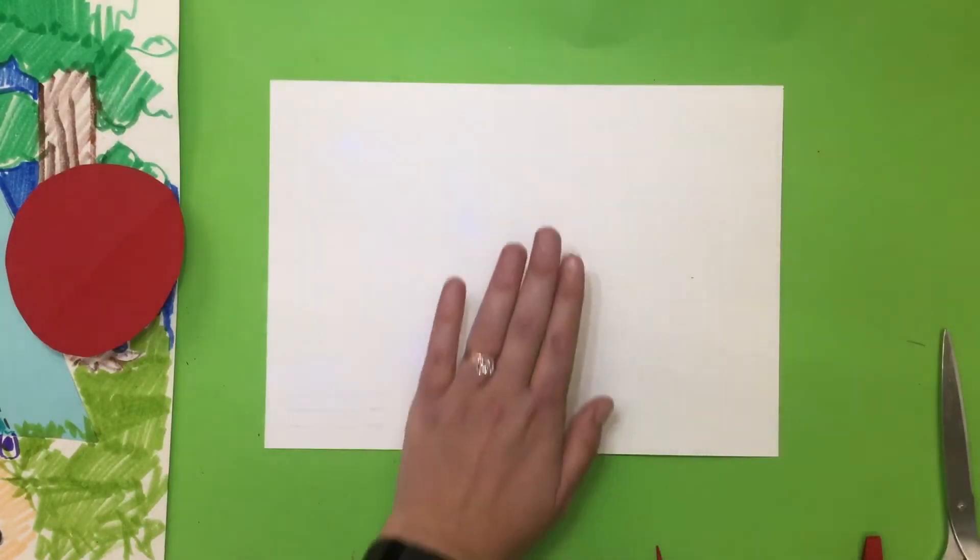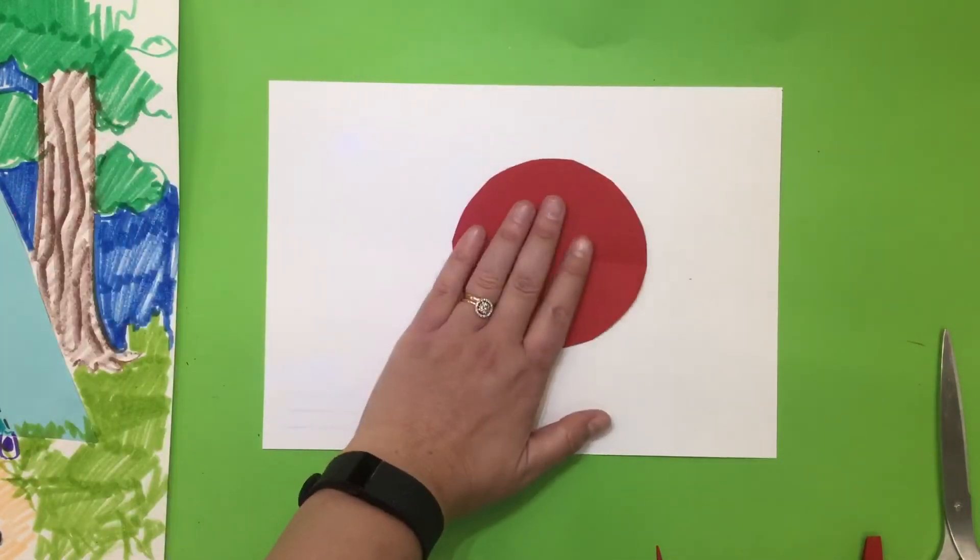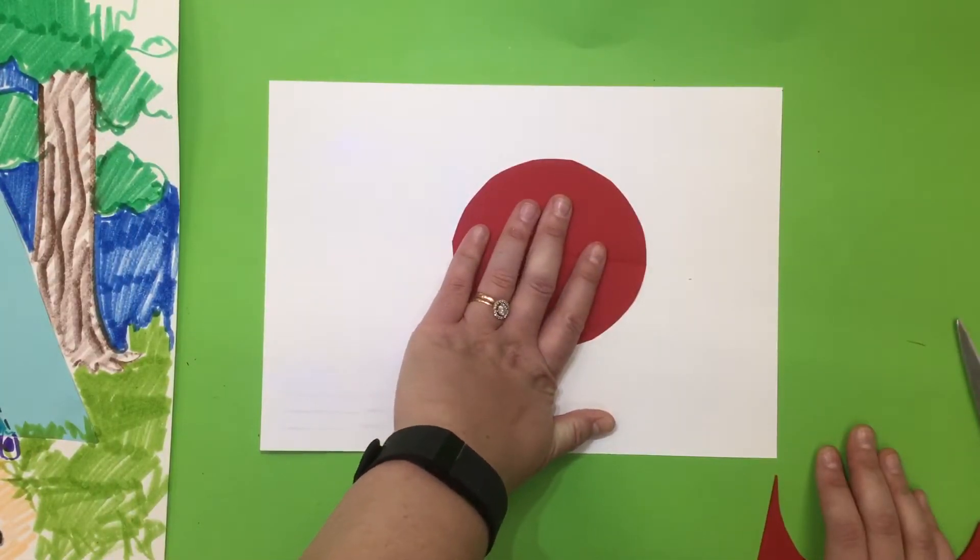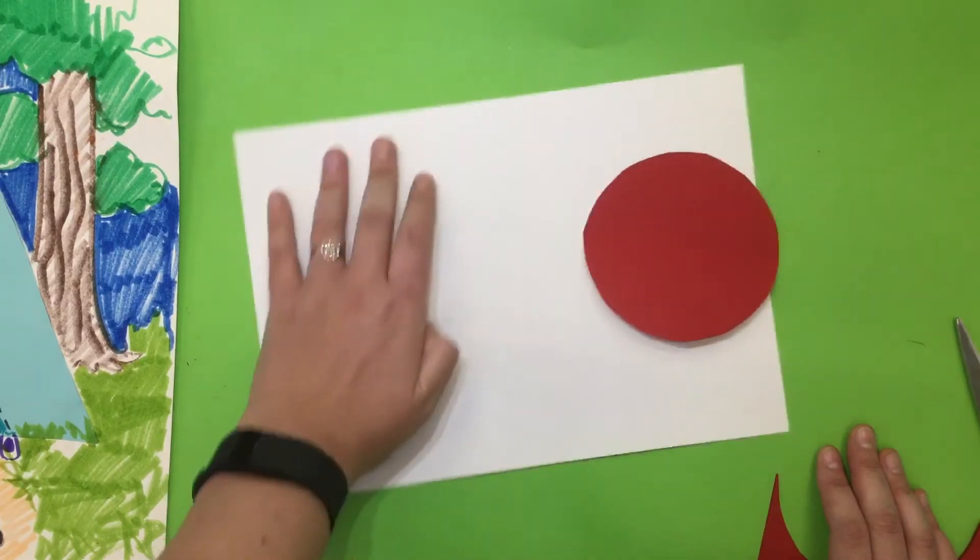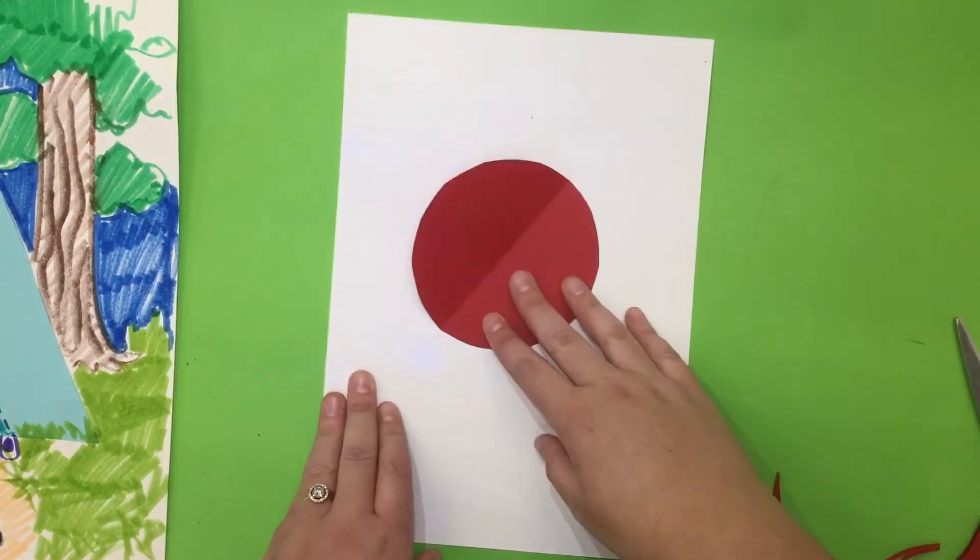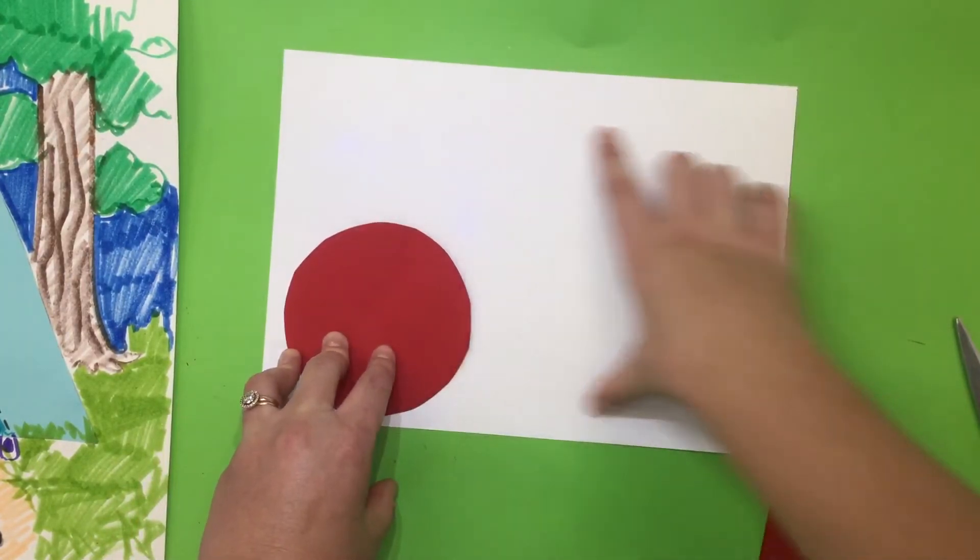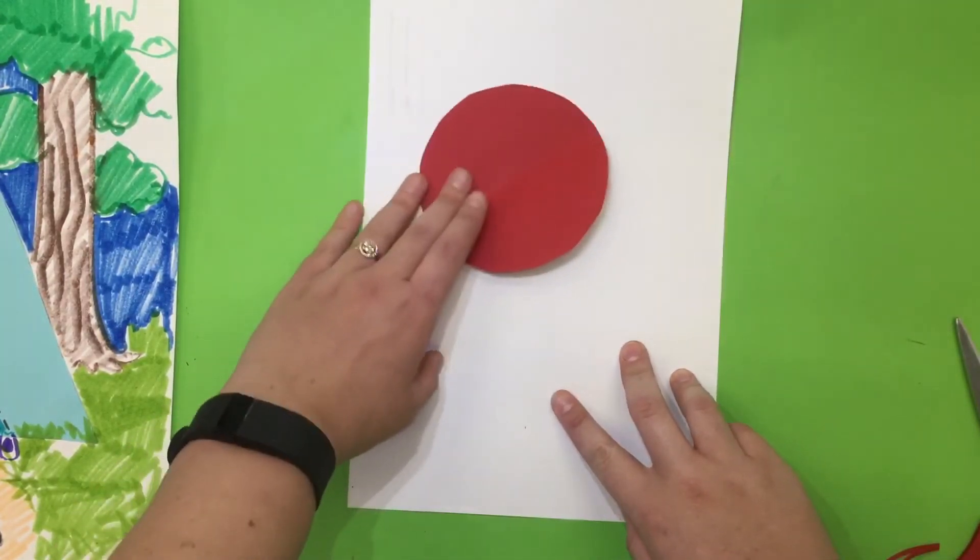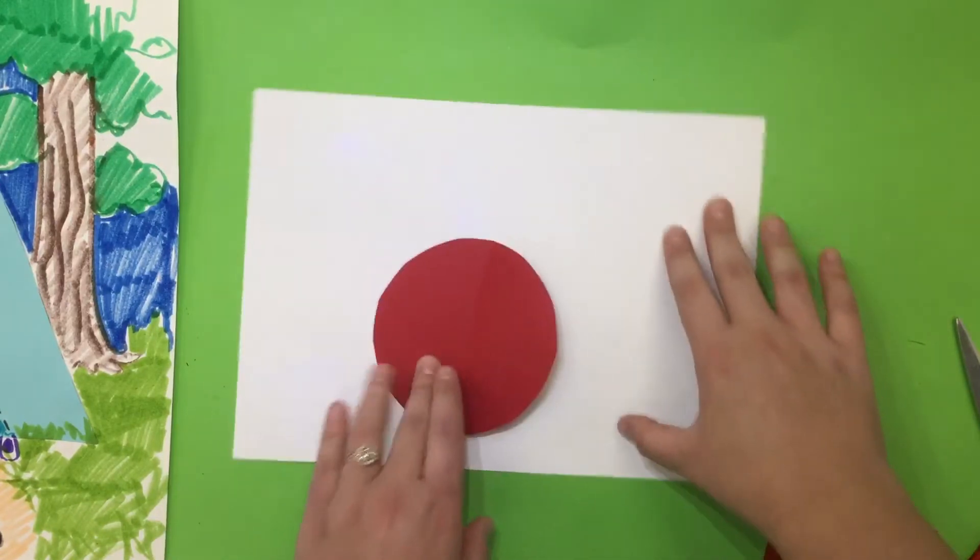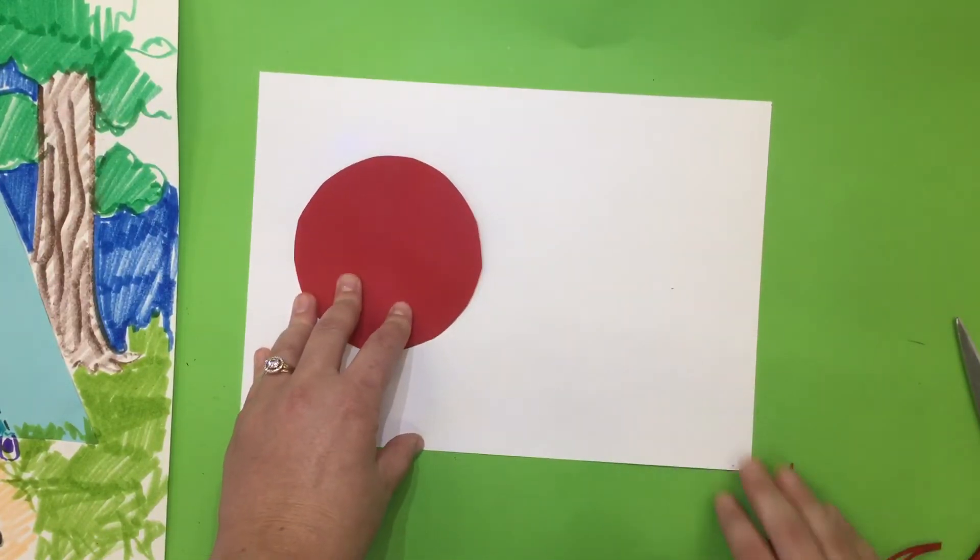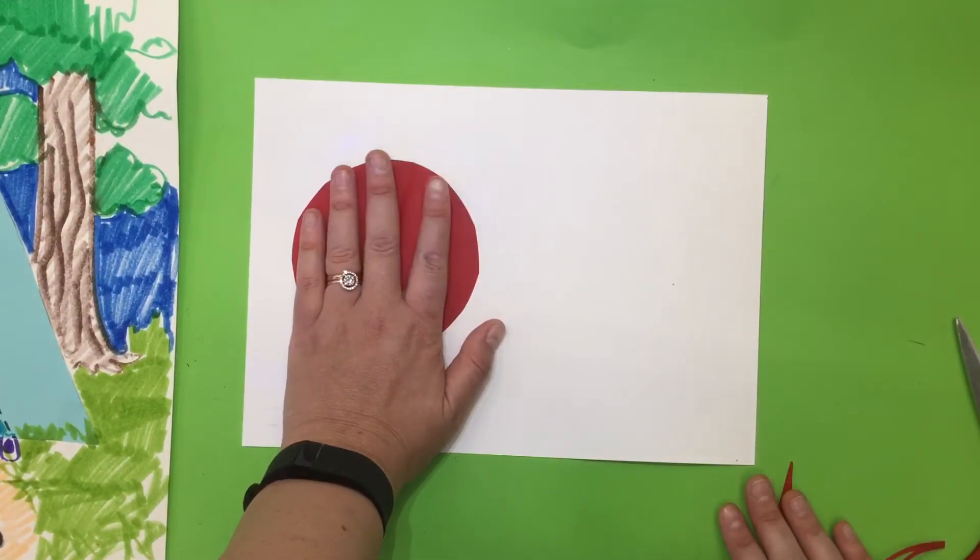Then on the front of your paper please carefully paste down your circle or square or triangle wherever you need it to be. If you'd like to face your paper this way you can or this way you can. This is called landscape and this is called portrait. So either way is fine with me. Then once you have pasted down your shape.